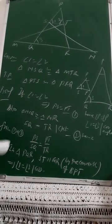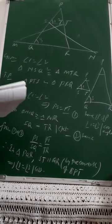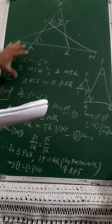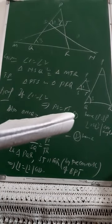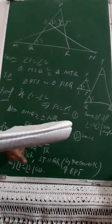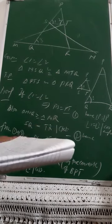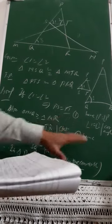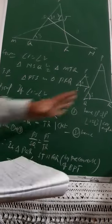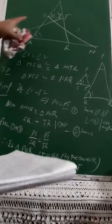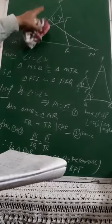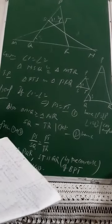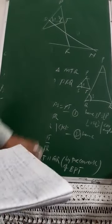Hence triangle PST is similar to triangle PRQ — that completes the proof for question two. For marking: one mark for given information, one and a half marks for equations one and two, one and a half marks for the concluding part. Total four marks.